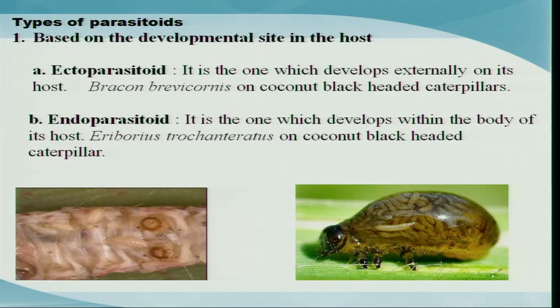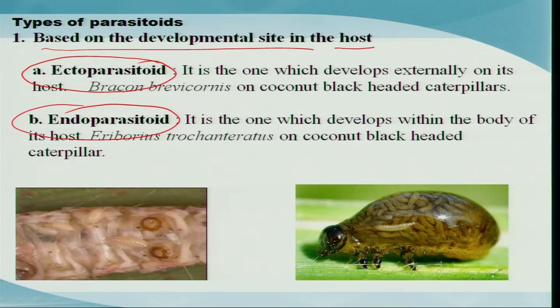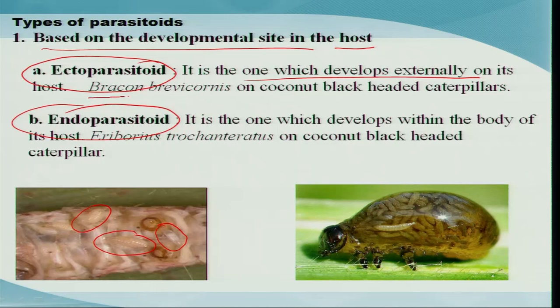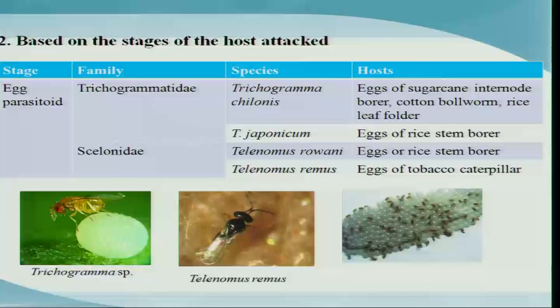Now let us look at the different types of parasitoids. Categories can be made based on certain parameters. Based on the developmental site in the host, they may be classified as ectoparasitoids or endoparasitoids. Ectoparasitoids are species where the immature or developmental stages are found on the host itself — for example, Bracon brevicornis on coconut black-headed caterpillars. Endoparasitoids are groups where the feeding stages are found within the body of the host and are not exposed.